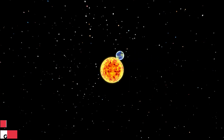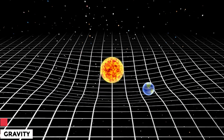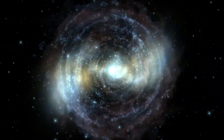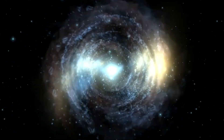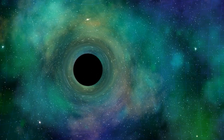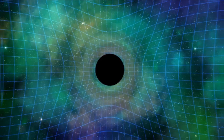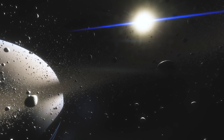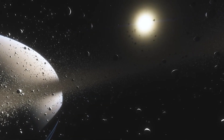Gravity. Gravity is an attractive force that exists between any two objects in the universe. It is one of nature's fundamental forces, keeping planets and other celestial bodies in their orbits around one another. Gravity is constantly affecting everything we do, even though we can't see or feel it. Its effects are everywhere, from the way apples fall to the ground to the way planets move in their orbits.